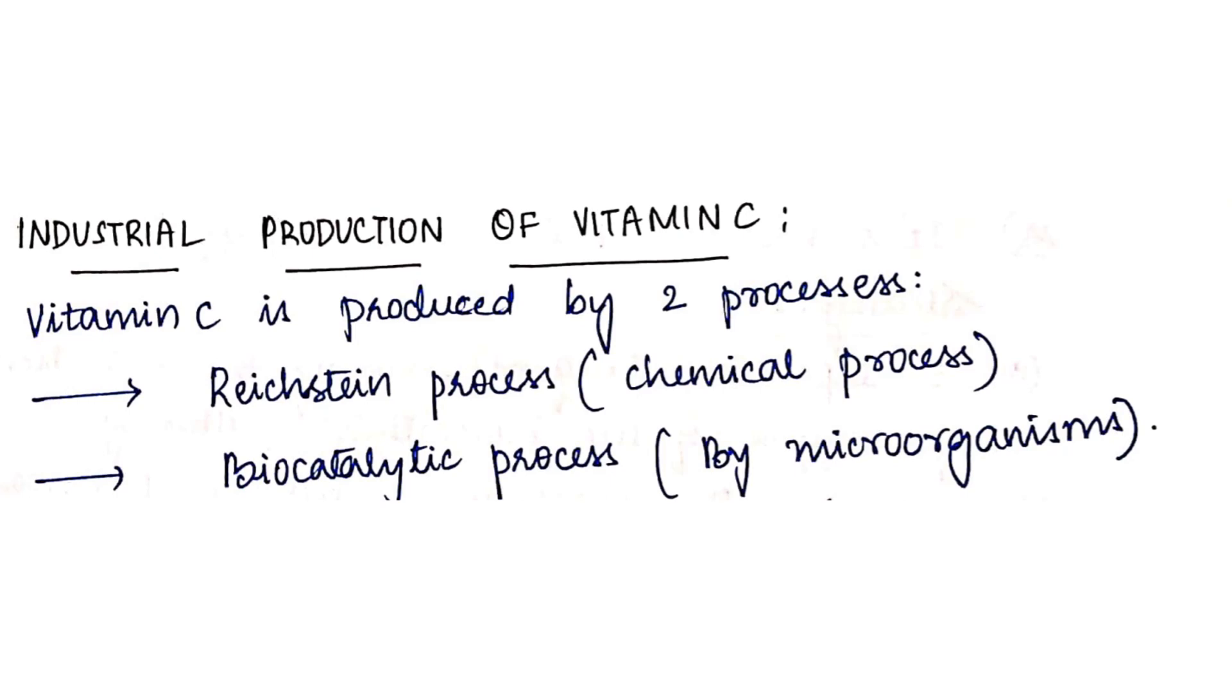We are producing vitamin C by two processes - one is Reichstein chemical process and one more is biocatalytic process by using microorganisms. Our main target is the second one, biocatalytic process - using microorganisms we can produce vitamin C.